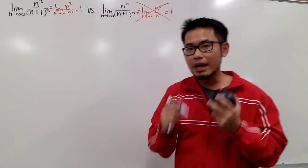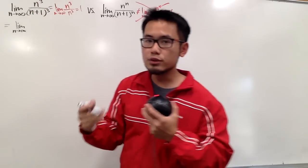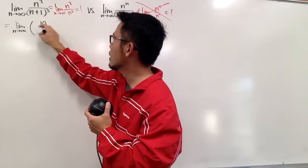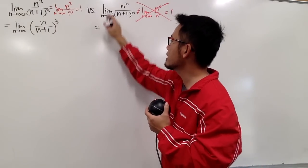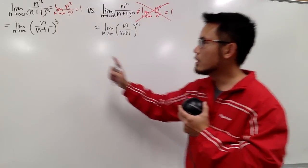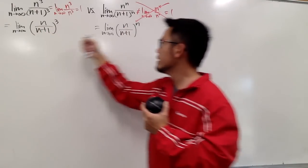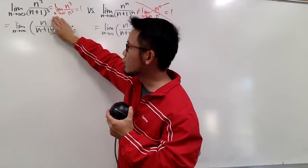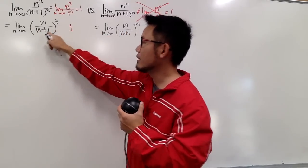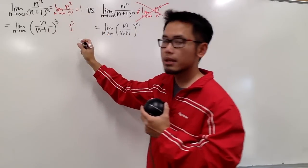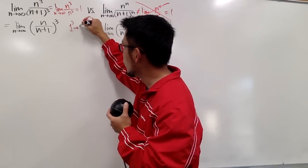Let me show you the first step of both. For the first one, both are raised to the third power, so I can write the expression as (n over n+1) to the third power. Taking the limit of the inner part n/(n+1) gives 1, and the power is just 3 — a finite number — so we get 1 to the third power, which equals 1. We're done with the first limit.